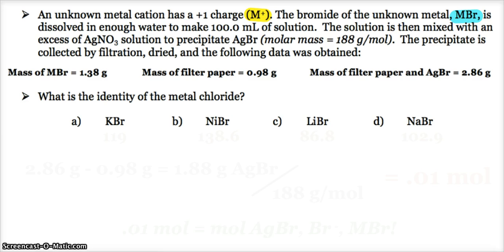and this is the following data. So I know how much of the metal bromide was put into the water to make that 100 mLs of solution. And then I know my empty filter paper mass and the mass of my filter paper and precipitate. So just like we did in lab, you get your filter paper with the precipitate and it's dried, and you find its mass.